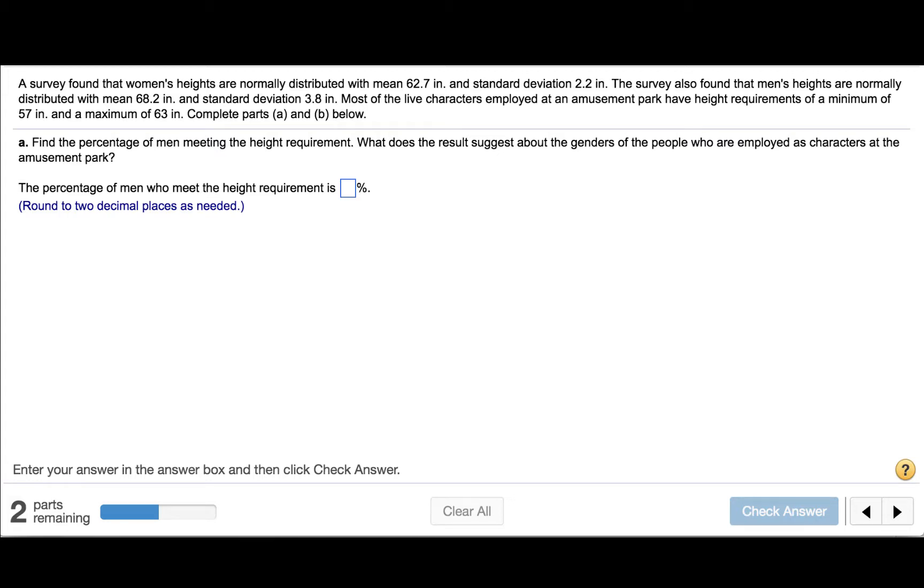A survey found that women's heights are normally distributed with mean 62.7 inches and standard deviation 2.2 inches. The survey also found that men's heights are normally distributed with mean 68.2 inches and standard deviation 3.8 inches. Most of the live characters employed at an amusement park have height requirements of a minimum of 57 inches and a maximum of 63 inches.